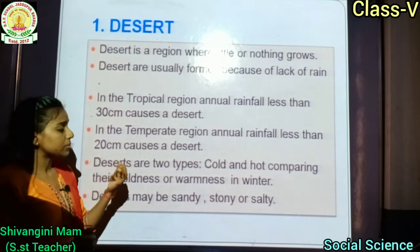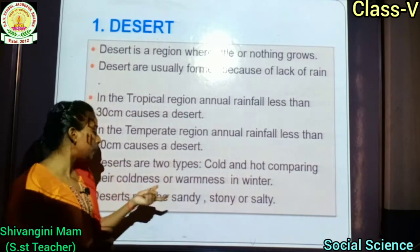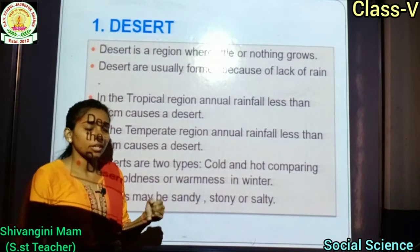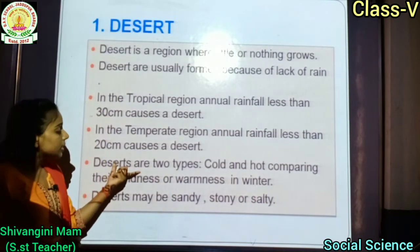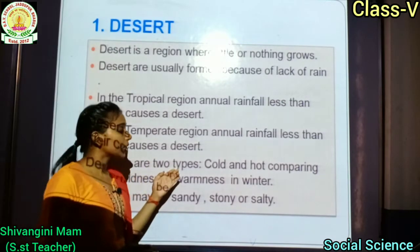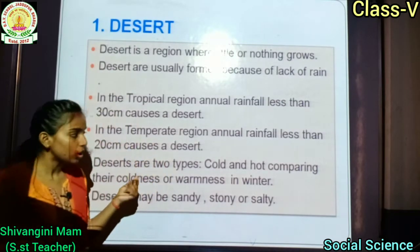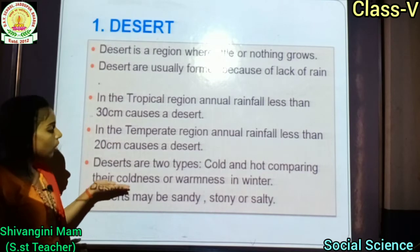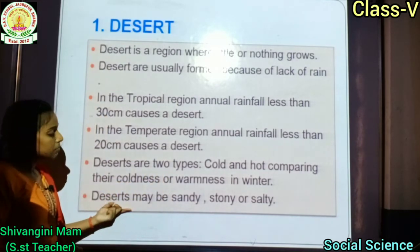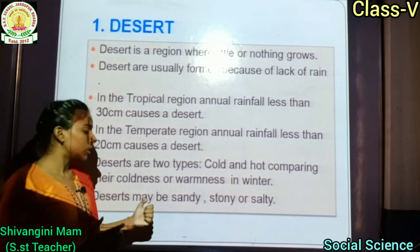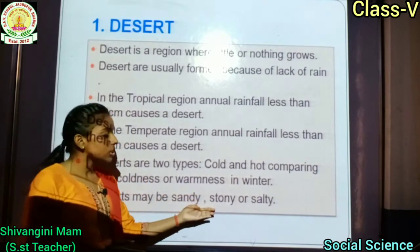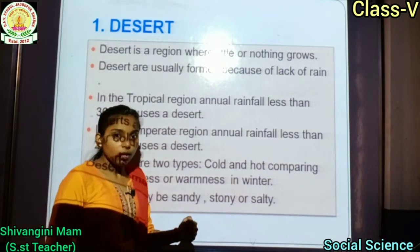Deserts are of two types — cold and hot — comparing their coldness or warmness in winter. According to your book, deserts are of two types. Deserts may also be sandy, stony, or salty. Desert sandy भी हो सकता है, stony भी हो सकता है, और salty भी हो सकता है.